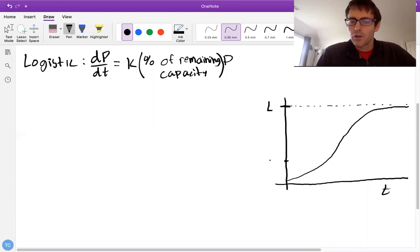we need to make this percent of remaining capacity a little more mathematical. So what we really mean by that is if our current population, our current P, is, let's say, something like 30, and our limit is something like 100, this question of what's the percentage of remaining capacity is saying what percentage of the total amount is left. So in this case, I would say that 70%, or 0.7, is this percent of remaining capacity. The way I got that was I said, well, we're currently using 30 over 100, and what's left is 1 minus 30 over 100.